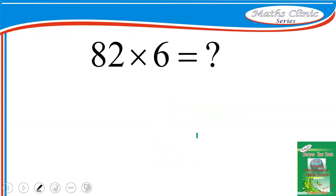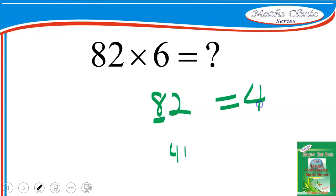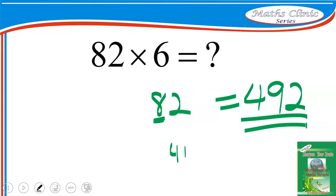Let's take another one: 82 times 6. First, halve 82 to get 41. Add 41 to the first digit, 8: 41 plus 8 gives 49. Attach the 2, and the answer is 492. That's 82 times 6. Try to do as many of these mentally as you can.